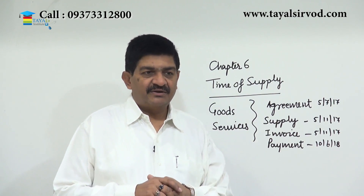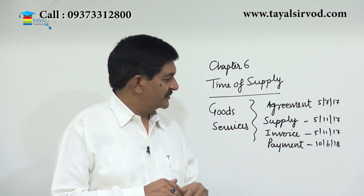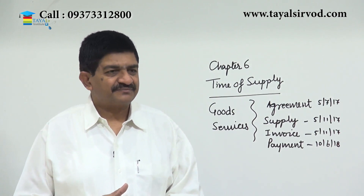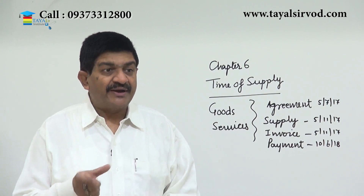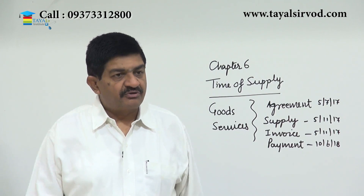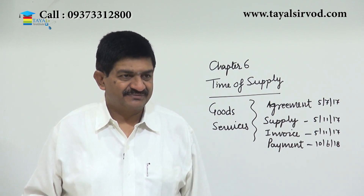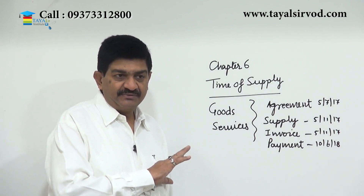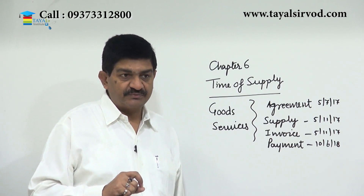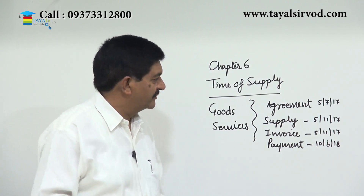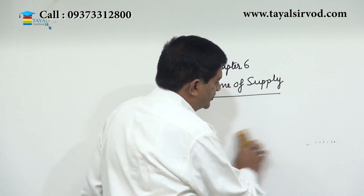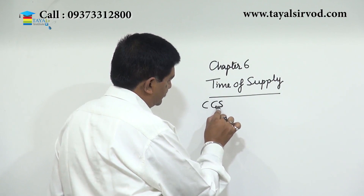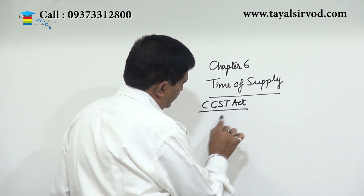When goods are supplied the rate may be one amount; when the invoice is raised it may be another rate; when payment is received it may yet another rate. So this chapter will tell you when the liability accrues and at what rate you are supposed to pay tax. In this chapter, we are going to cover the CGST Act: Section 12, Section 13, and Section 14.